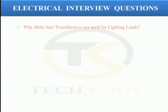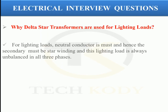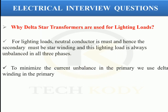The first question is: why are delta-star transformers used for lighting loads? For lighting, the neutral conductor is a must. Hence, the secondary must be star winding. This lighting load is always unbalanced across all three phases. To minimize the current imbalance in the primary, the primary must be in delta connection. So, delta-star transformers are used for lighting loads.